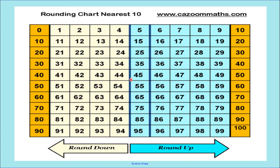So from this chart we can make out a shortcut. If the digit at the ones place is one, two, three, or four, we will round it down to the lower ten. And if the digit at the ones place is five, six, seven, eight, or nine, we will round it up to the higher ten. Isn't it easy, children? With the help of this simple chart we have developed a shortcut.